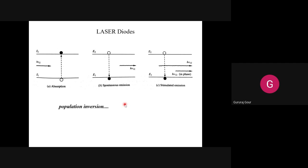We will look at three phenomena which normally happen with photodiodes, whether LED, laser, or any kind of photodetector. The first phenomenon is absorption. The figure is simple: the electron jumps from energy level E1 to E2, absorbing energy hν₁₂. This amount of energy, if given to any electron residing at energy level E1, will be absorbed, causing it to jump to energy level E2 - moving from energy level 1 to 2.